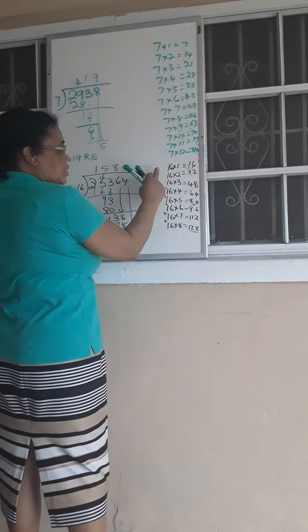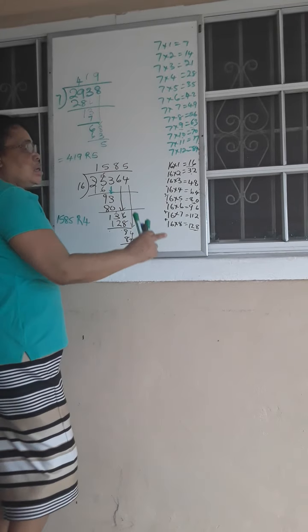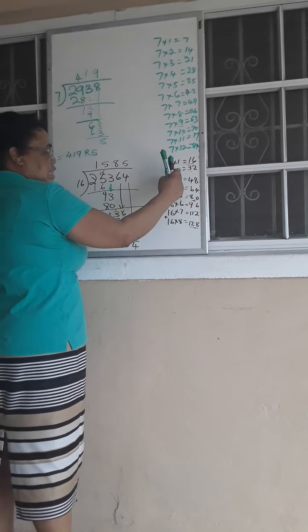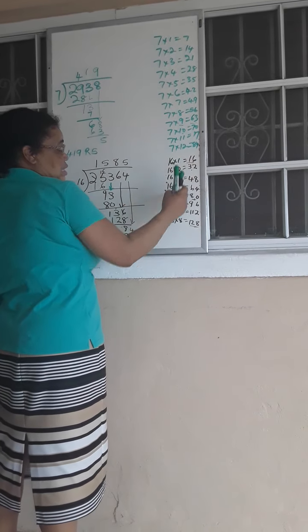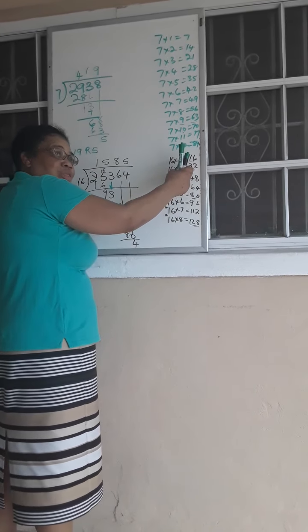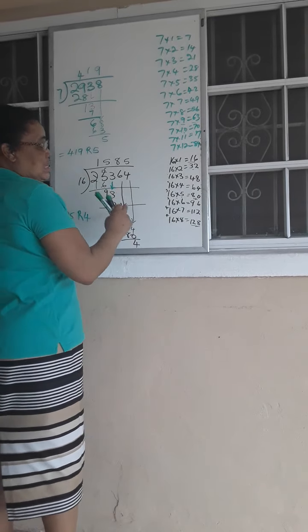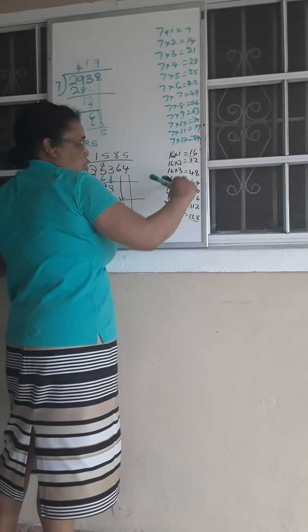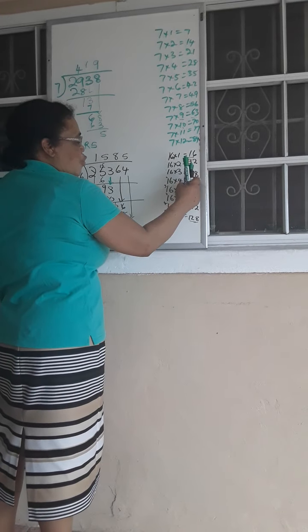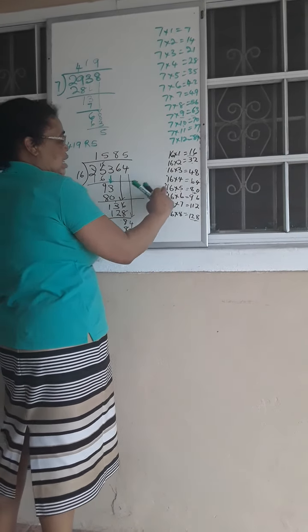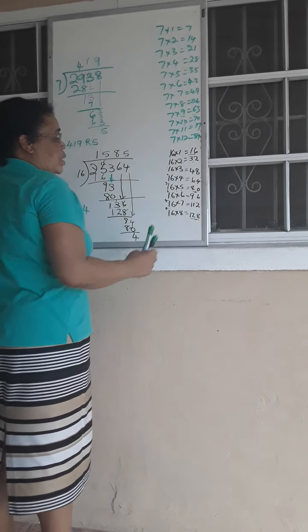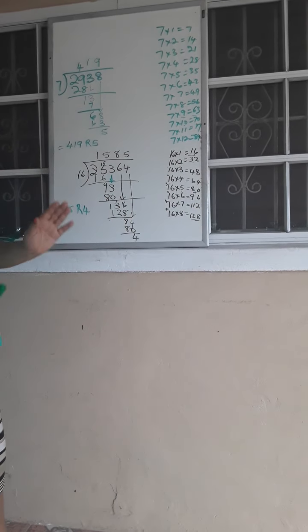It's the same thing with my 16 times table. 16 times 1 is 16. 16 times 2, add 16 to 16, and I will get 32. 16 times 3, add another 16 to 32, and I will get 48. 16 times 4, add another 16 to 48, and I will get 64.